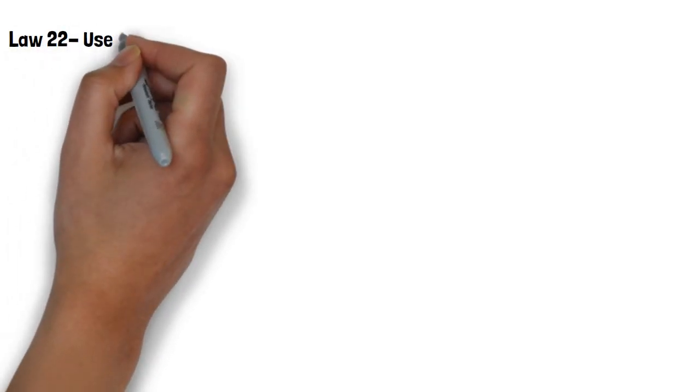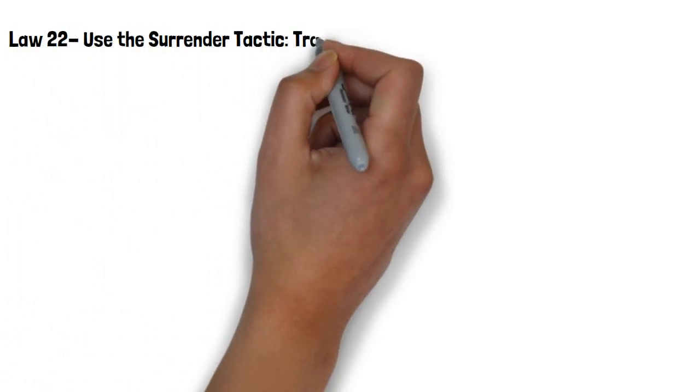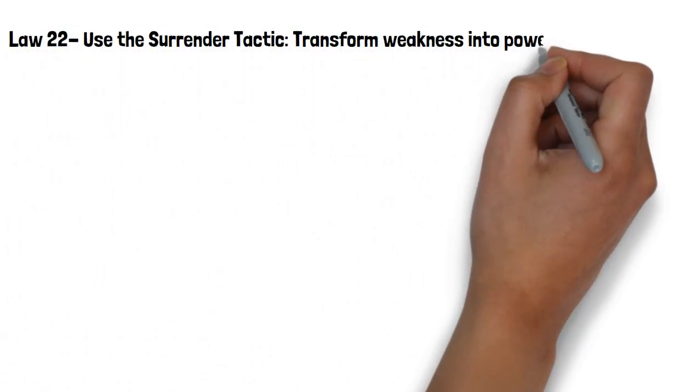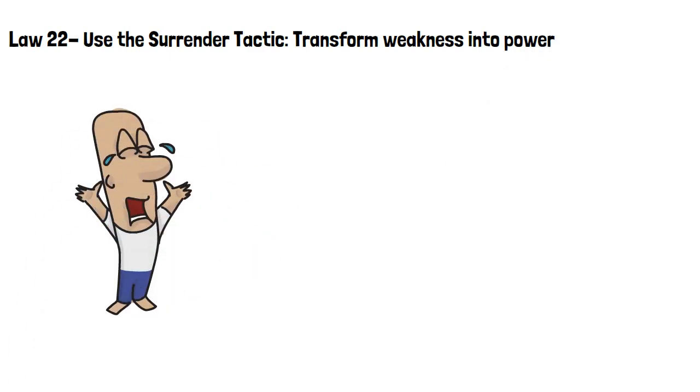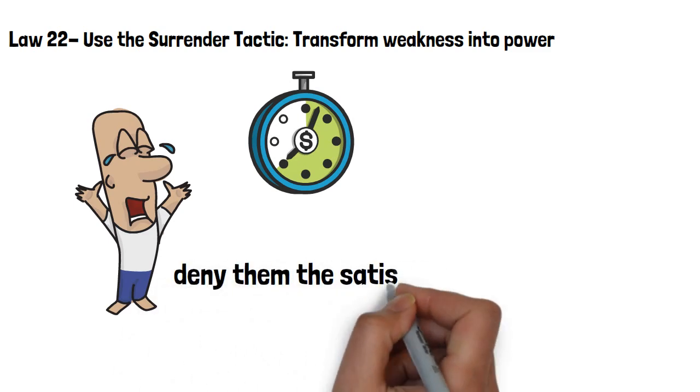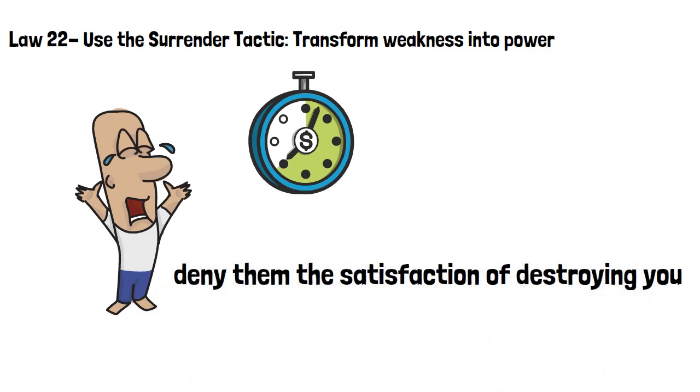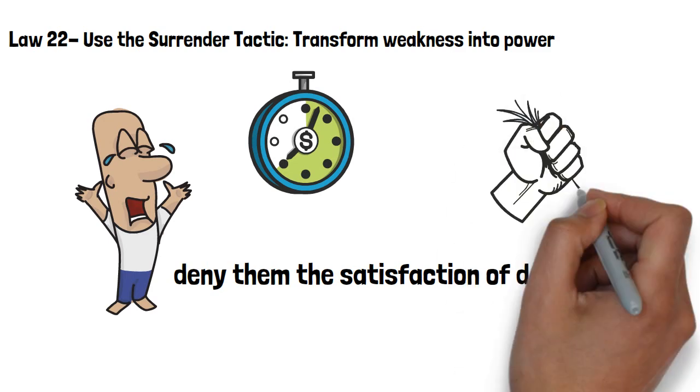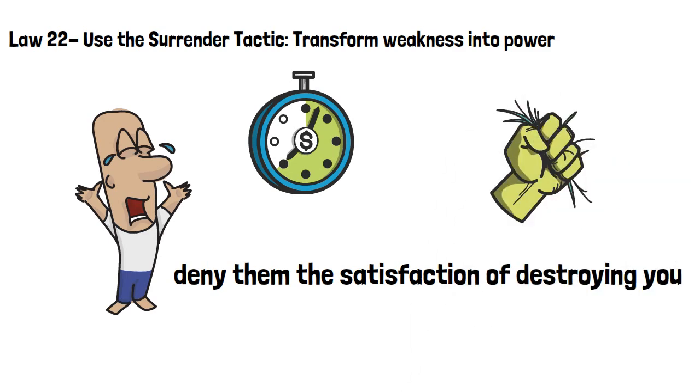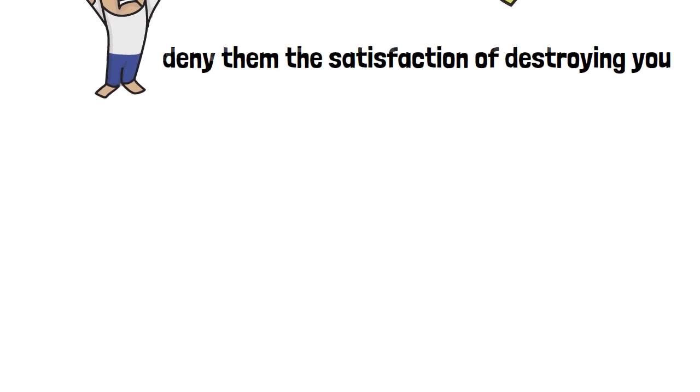Law 22, use the surrender tactic. Transform weakness into power. Surrender before you're about to be defeated. This buys you more time to plan your revenge and to punish your conqueror. By surrendering, you deny them satisfaction of destroying you. In doing this, you weaponize your act of surrendering. In addition, by yielding, you gain the upper hand because you deceive your rivals into thinking that they've defeated you even as you plot their downfall. This confounds them and means they are unlikely to act aggressively against you.